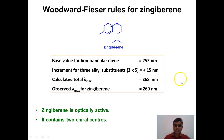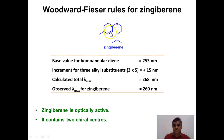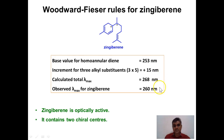The λmax value calculated for zingiberene using the Woodward-Fieser rule applied to the homoannular diene: the base value is 253 nm, with three alkyl substituent/ring residue increments of 5 nm each, giving 253 + 15 = 268 nm — close to the observed value of 260 nm. This close agreement confirms that zingiberene is a conjugated homoannular diene.